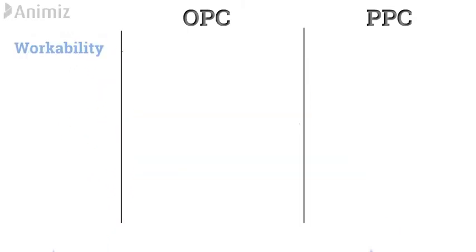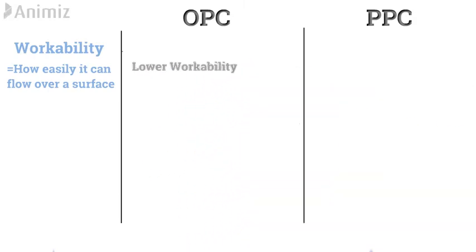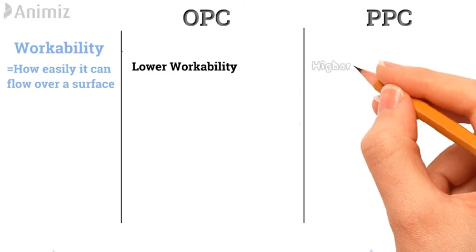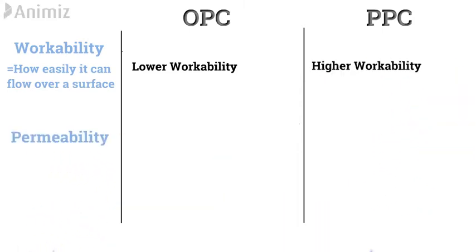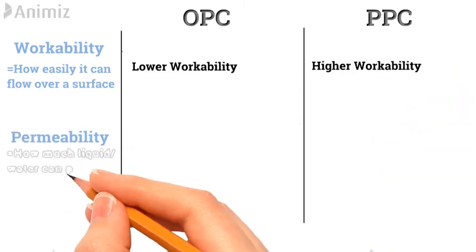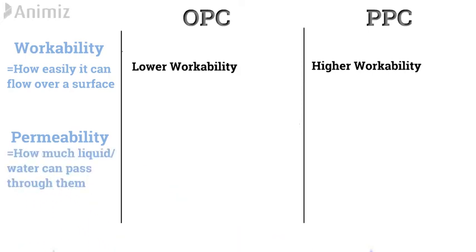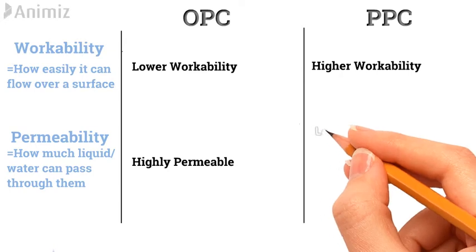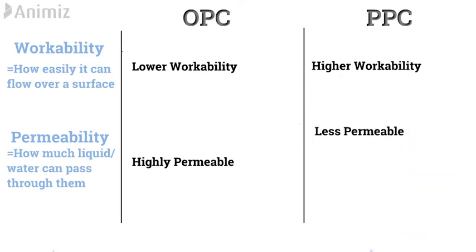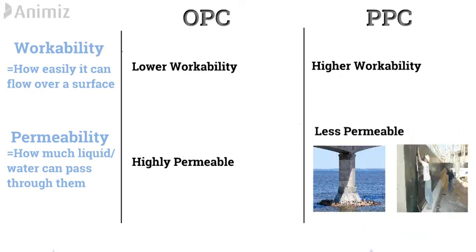Workability means how easily it can flow over a surface. The concrete made by using OPC has lower workability, whereas concrete made by using PPC has higher workability. Permeability is the quality of any substance to measure how much liquid or water can pass through it. Due to the absence of pozzolanic material, Ordinary Portland Cement is highly permeable to water, whereas Pozzolana Portland Cement is less permeable. Hence, it is suitable for structures like bridge piers or foundations where a waterproof structure is recommended.